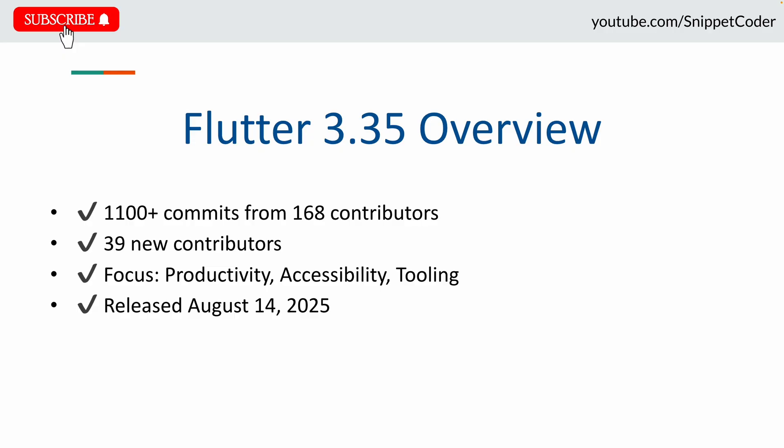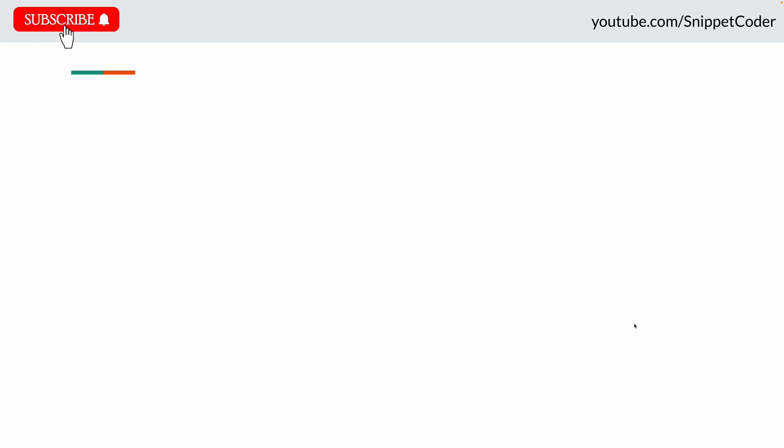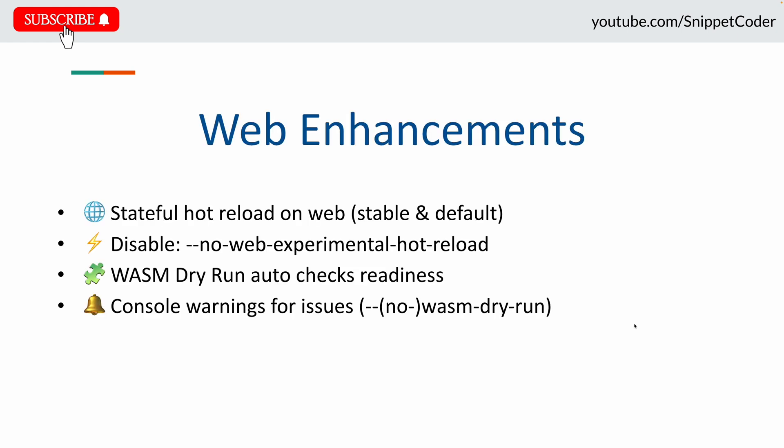The first update is web enhancements. One of the biggest highlights is that hot reload on the web is now stable and enabled by default — you can still turn it off with a flag if needed. Another major update is the WASM dry run feature, which checks your app's readiness for WebAssembly and gives you warnings directly in the console, meaning faster debugging and smoother development on the web.